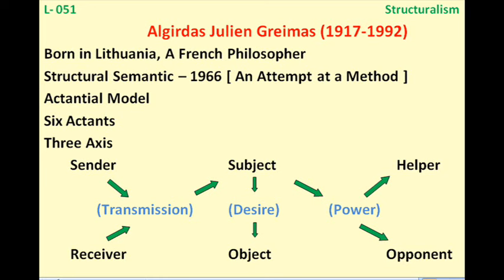He was born in 1917 and died in 1992. He is famous for his work 'Structural Semantics,' published in the year 1966. The subtitle to this work is 'An Attempt at a Method,' and in this work he talks about the actantial model of a plot.